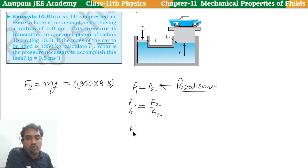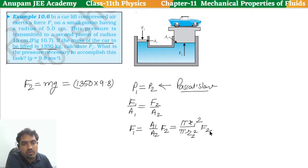Now F1 equals A1 by A2 times F2. What is A1? A1 is pi R1 squared. And A2 is pi R2 squared times F2. Pi will cancel out. What is R1? Smaller piston 5 cm, second piston 15 cm. So 5 squared divided by 15 squared F2.